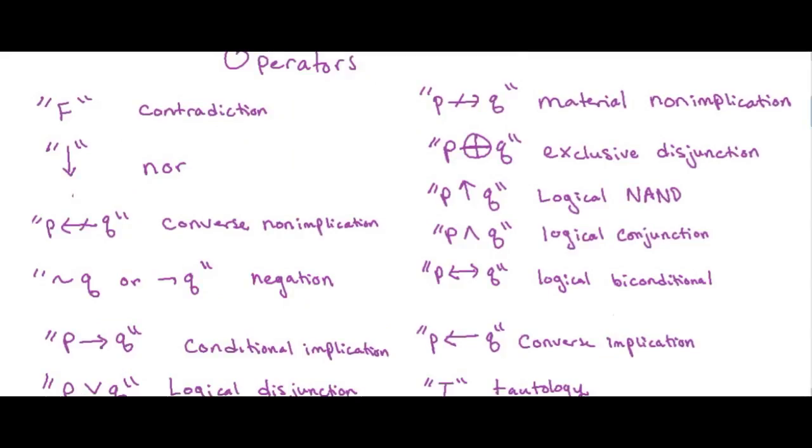So we have a lot of different operators we can use for truth tables. We have a false, an F representing a contradiction, a down arrow, nor. And in the next video, when we're learning how to use truth tables, we're going to evaluate for each operator.